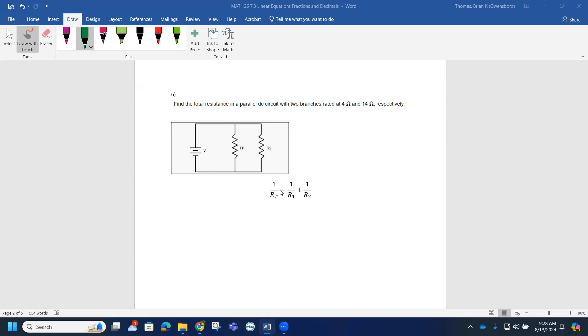So to find total resistance, we have to use the formula: 1 over Rt equals 1 over R1, which is going to be 4 ohms, plus 1 over 14. Notice that total resistance is the unknown—it's a variable—and notice that total resistance cannot be zero because you can't have zero on the denominator of a fraction, and zero would not make sense anyway in this problem. That would be an excluded value, but they don't even ask for that here.